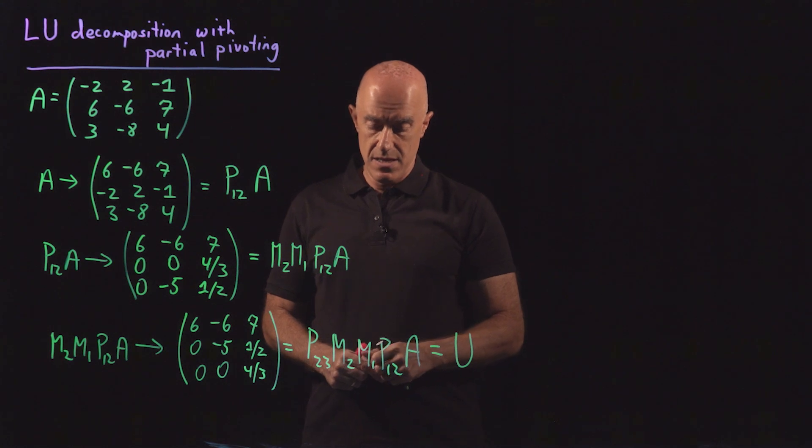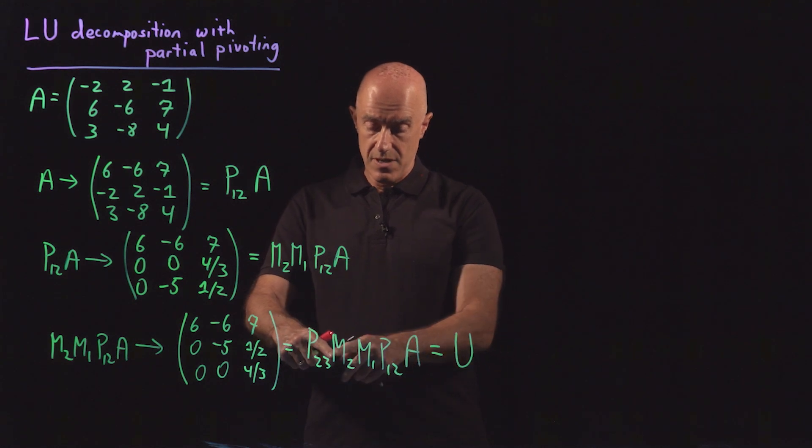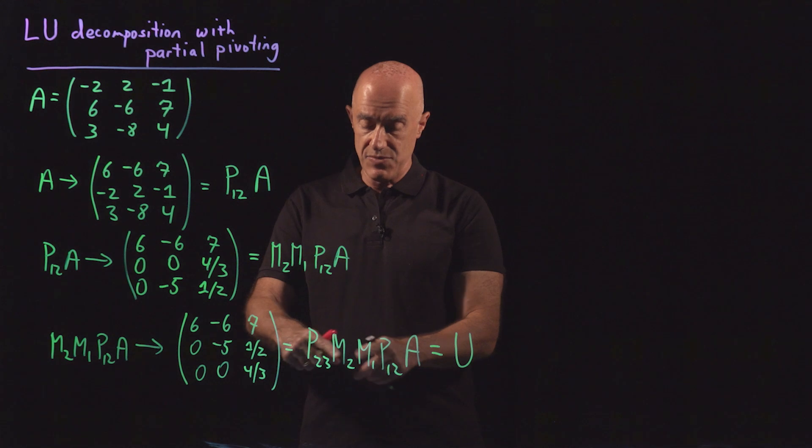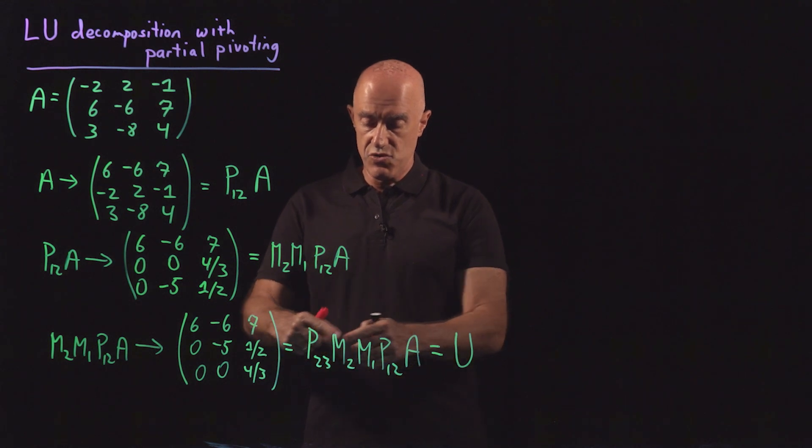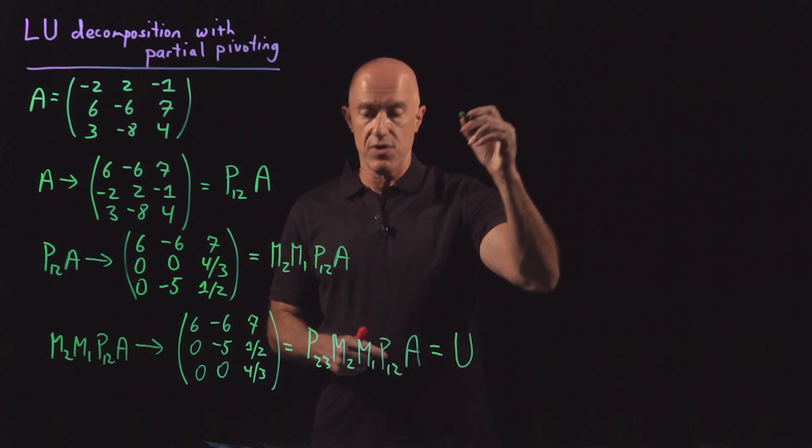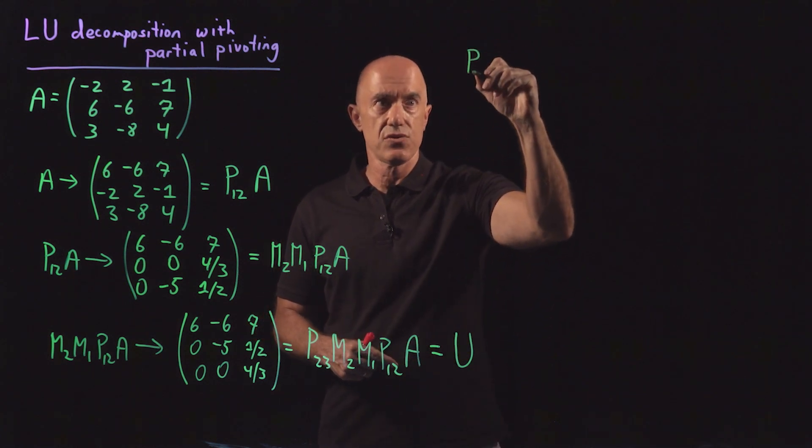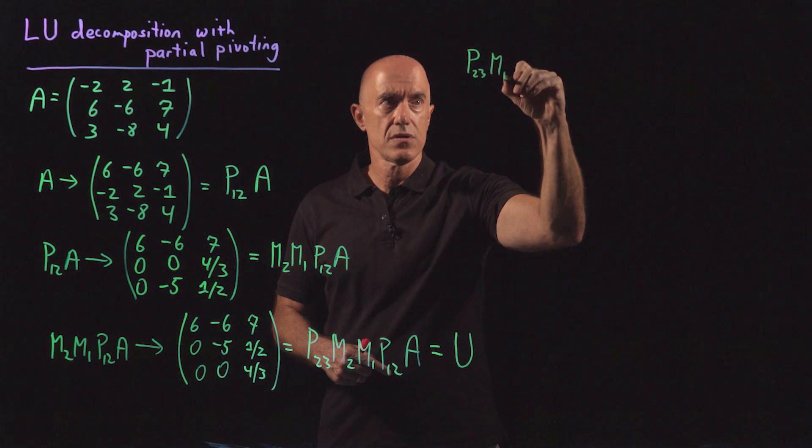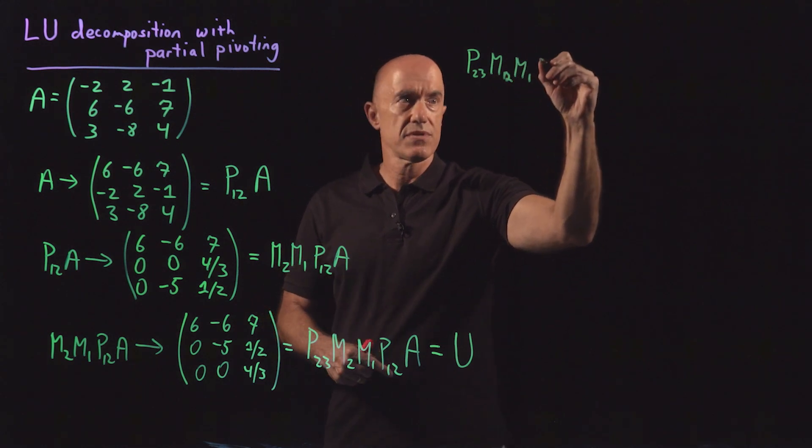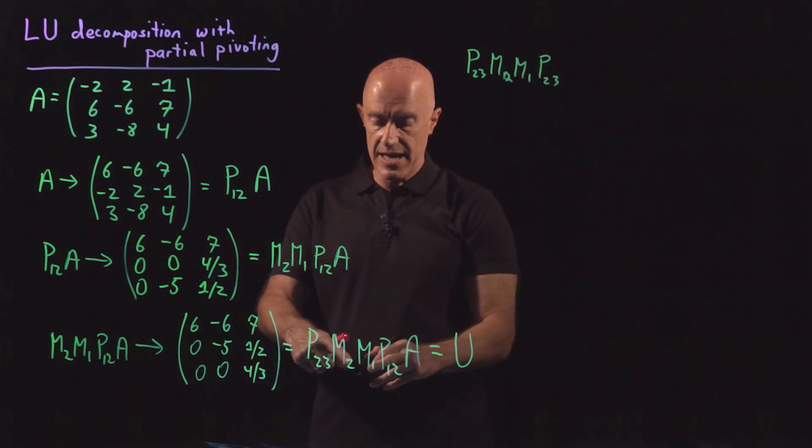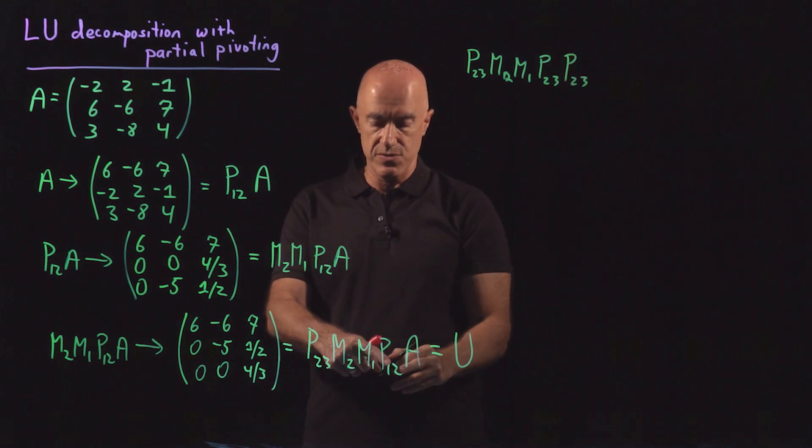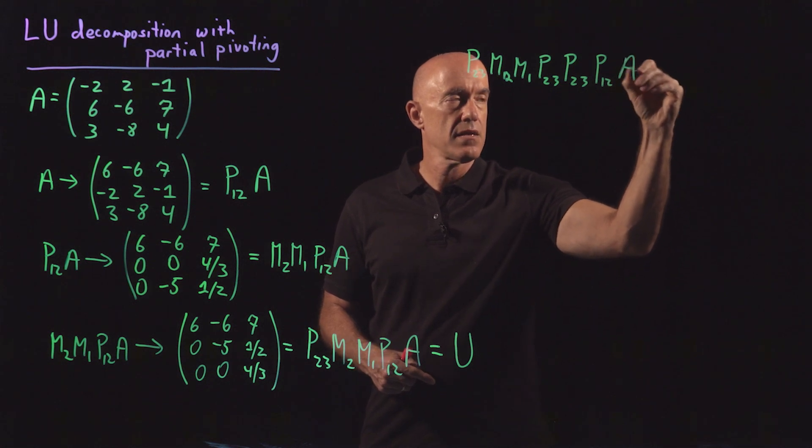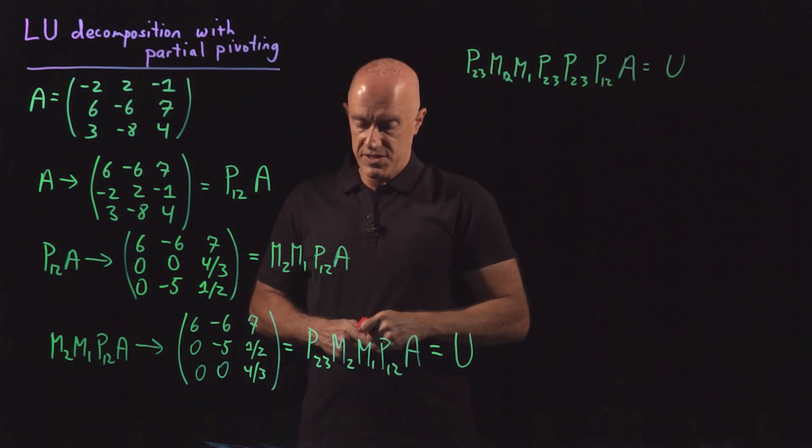Now we want to find the L. The way we find the L is we want to do something to the M2, M1 so that it stays lower triangular matrix once we invert it. The trick we use is that P23 is its own inverse. So we can rewrite this equation as P23 times M2 times M1 times P23. Again, on the right, P23 is its own inverse. So we can get rid of P23 by multiplying by P23. And then P12A equals U.